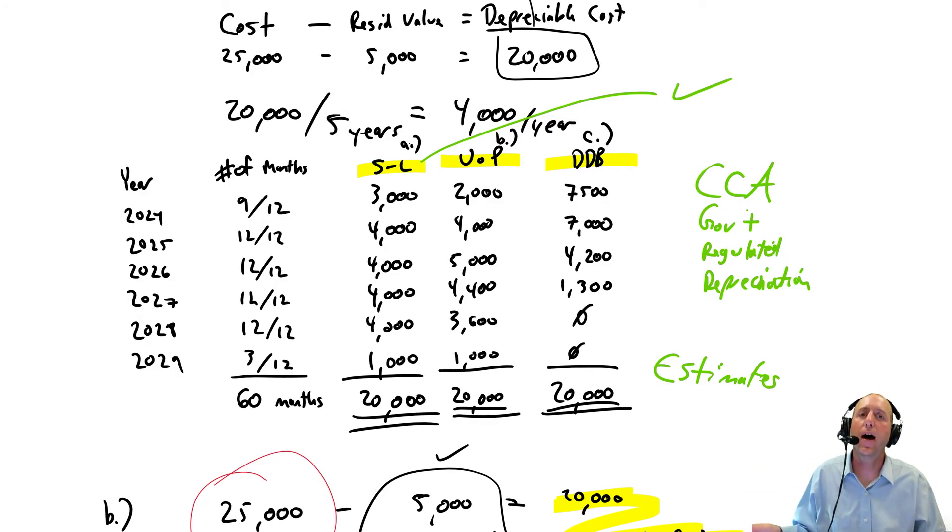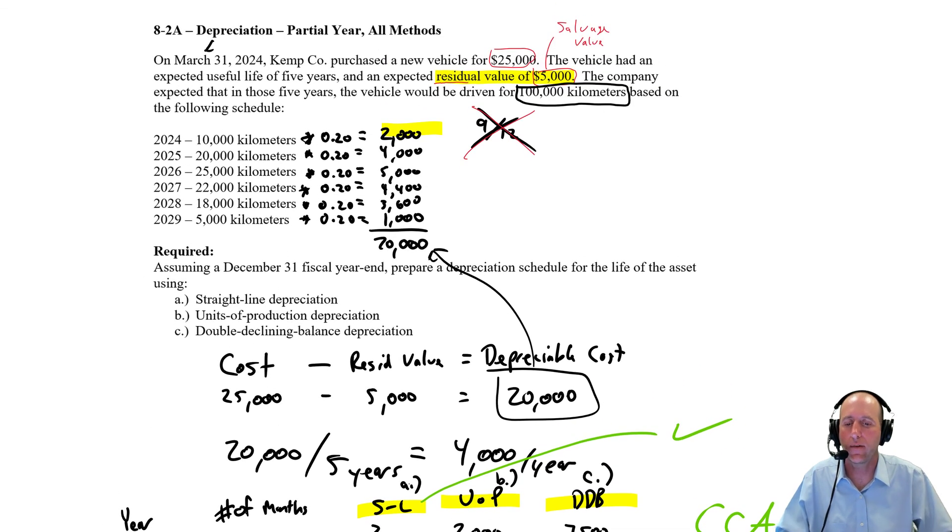The reason governments like declining balance methods is because it's harder to manipulate. So if I were an unethical accountant, and I'm very, very ethical, and I wanted my expenses to be higher so my profits would be lower, and if my profits are lower, of course, my taxes are lower. I want to cut the government out as much as I can. One way to do it would be to make the useful life shorter. Rather than five years, if I made this four years, I'm dividing by four, and my depreciation expense gets higher. If you have a shorter life, the depreciation expense is higher each year, and expenses are higher means profits are lower. You're paying the government less. The government doesn't like this. They go we can see companies are going to manipulate their residual value, companies are going to manipulate their useful life. Change those numbers, and you change your taxes too.